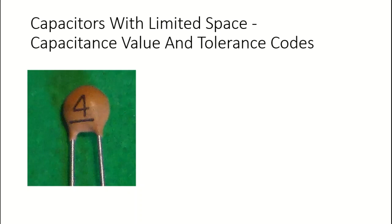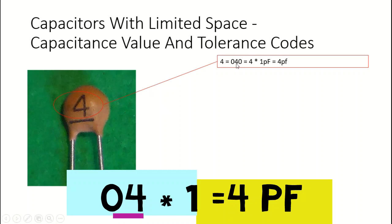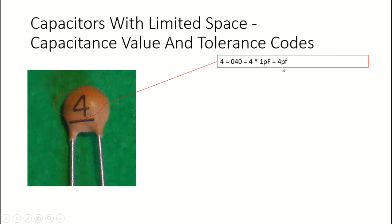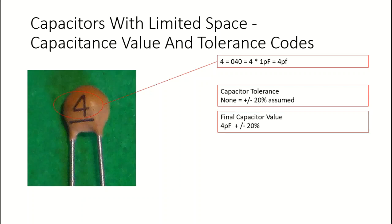What happens when a capacitor has nothing more than a single number written on it? We read that value similarly to the previous one. In the case of a '4', it's understood as '04' because there's no multiplier, so that becomes '040' - meaning a zero multiplier, giving us 4 times 1 picofarad. So this is a 4 picofarad capacitor. Because this capacitor has no tolerance letter, it's understood to have a tolerance of plus or minus 20%. So the final value is a 4 picofarad capacitor plus or minus 20%.